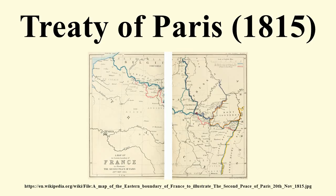An additional article on the slave trade was appended to the definitive peace treaty, addressing the issue of slavery. It reaffirmed the Declaration of the Powers on the Abolition of the Slave Trade of 8 February 1815, and added that the governments of the contracting parties should, without loss of time, find the most effectual measures for the entire and definitive abolition of a commerce so odious, and so strongly condemned by the laws of religion and of nature.